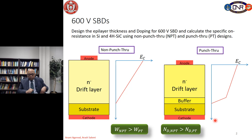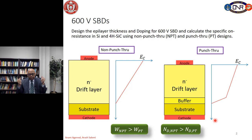Last time we talked about the reverse leakage current of Schottky diodes and how that current is increased by barrier lowering, tunneling, and impact ionization. And before that we had talked about the forward bias of the Schottky diodes.